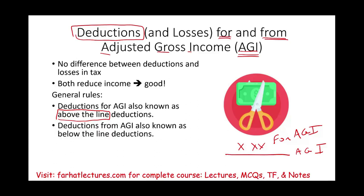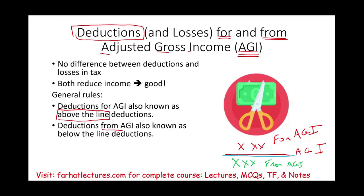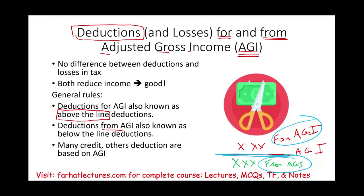Then we have deductions from AGI — deductions that take place below the line. That's why it's called 'for and from AGI.' Where is this imaginary line coming from? We're going to look at the tax form; it's on the tax form itself. Again, AGI is important because it determines many other credits, deductions, and taxable income.